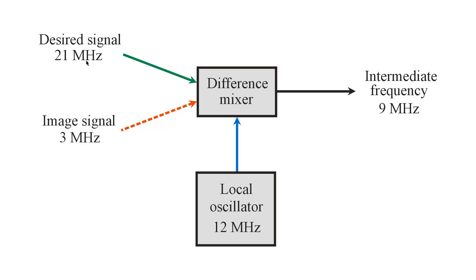Supposing you have some rogue signal at 21 megahertz — some rogue radio stations operating illegally can transmit anywhere they please as long as they can get away with it. So: 21 megahertz desired signal, intermediate frequency 9 megahertz, local oscillator 12 megahertz. Now suppose another rogue signal comes in nearby, so strong that it gets through whatever selectivity exists prior to the difference mixer. That 3 megahertz signal will mix with the 12 megahertz local oscillator signal in the difference mixer to give 12 minus 3 equals 9 megahertz — so this rogue signal comes right on top of your desired signal.